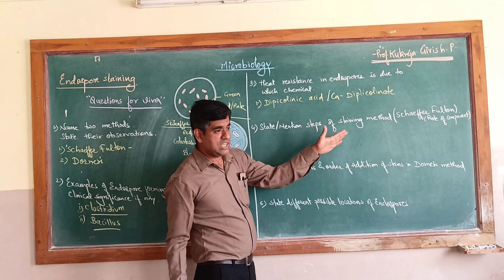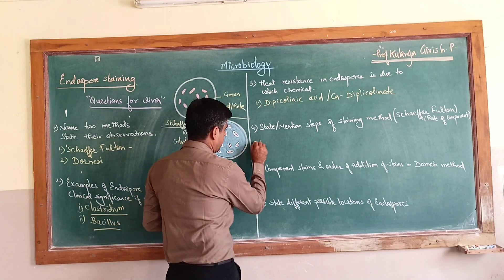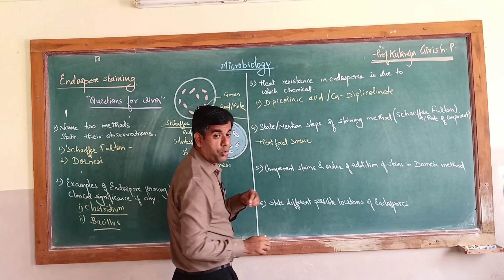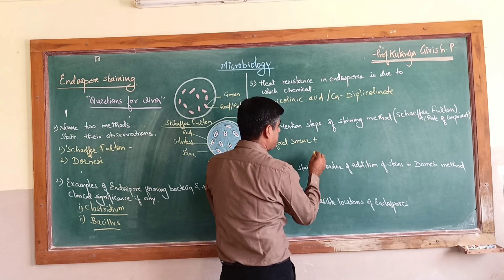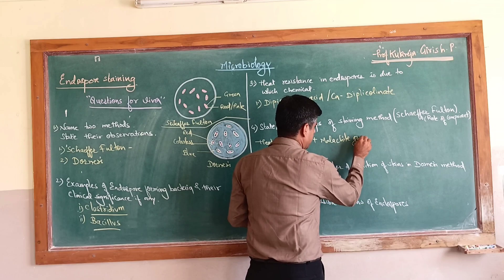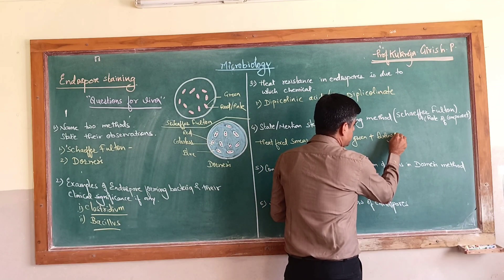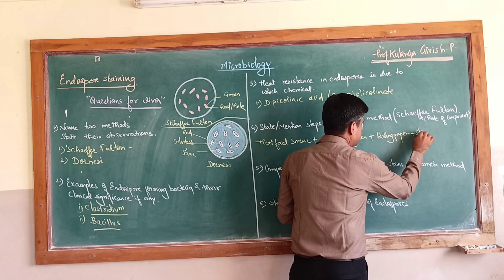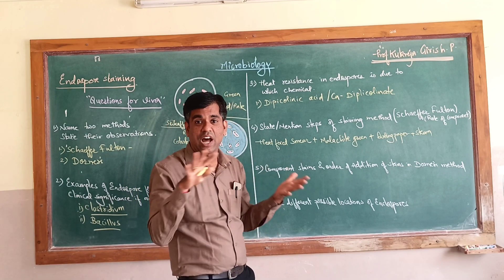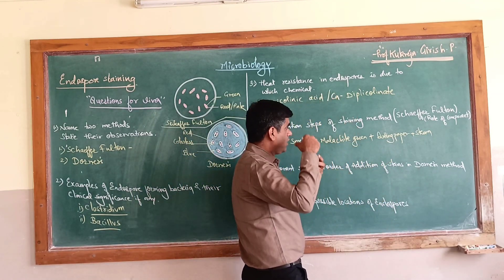Next: state the steps of the Schaeffer-Fulton staining method. You take a heat-fixed smear of the suspected sporulating organism, then apply the primary stain — malachite green, a weak stain. Place a blotting paper on the smear and steam it, continuing to add a few drops of malachite green so the slide does not dry out or char.